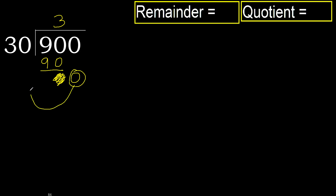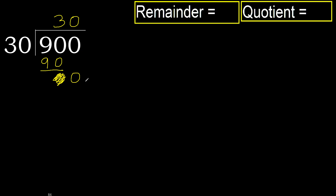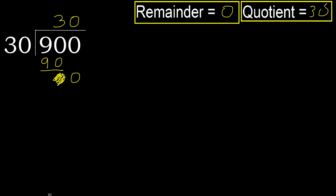0 is less, therefore next. There is no next number, therefore finish. Complete — always complete with 0. Therefore 900 divided by 30 is 30.